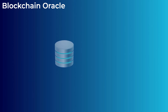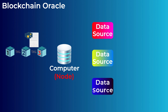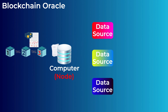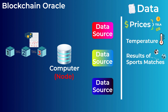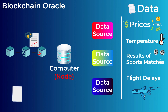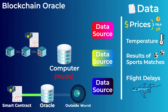Blockchain oracles are simply computers, also called nodes, that gather data from different sources and then send it to a smart contract that needs this data on the blockchain. This data can be prices of crypto, stocks, or currencies, temperatures, results of sports matches, or even flight delays. You can think of oracles like an intermediary that connects smart contracts with the outside world.